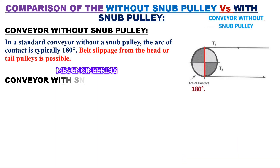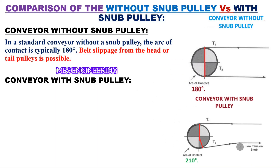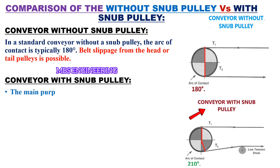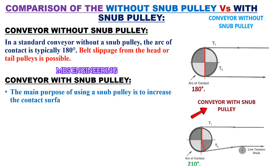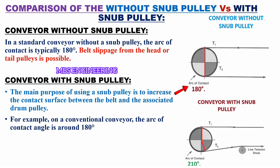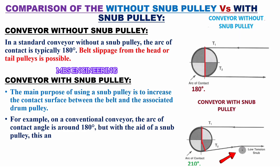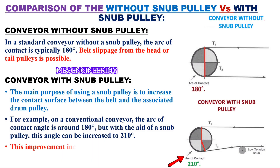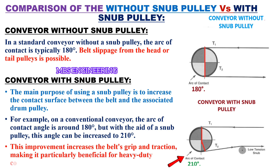Second, we look at the conveyor with a snub pulley. The main purpose of using a snub pulley is to increase the contact surface between the belt and the associated drum pulley. On a conventional conveyor, the arc of contact angle is around 180 degrees, but with the aid of a snub pulley, this angle can be increased to 210 degrees. This improvement increases the grip and traction of the belt, making it particularly beneficial for heavy-duty conveying applications. Please refer to the picture for a better understanding.